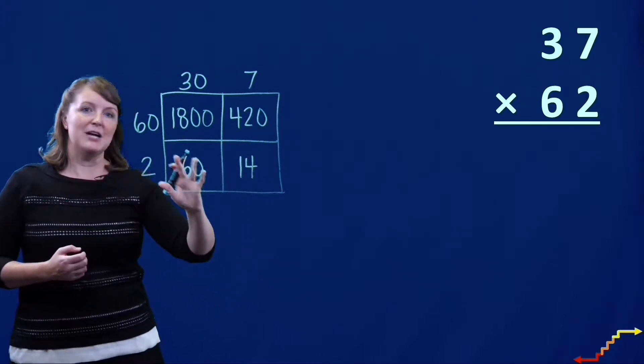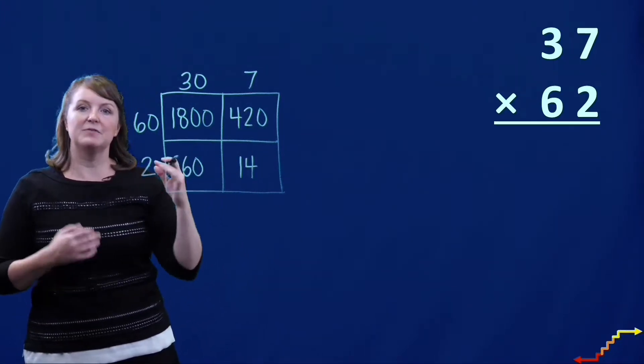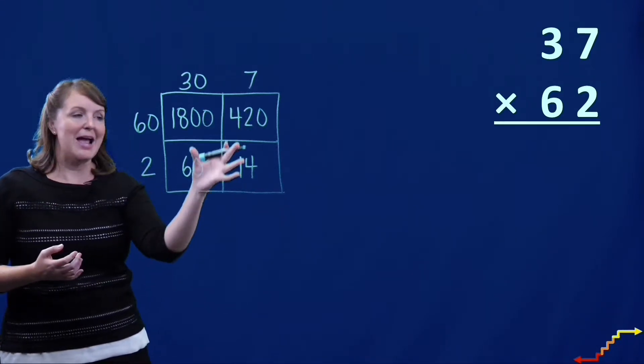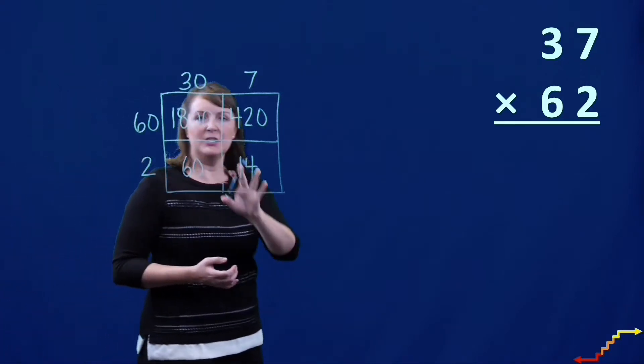Now, what we have done is we have figured out all the partial products for this multiplication problem. Now, to figure out the final product, we're going to add the partial products together. So I'm going to move over here to do that.